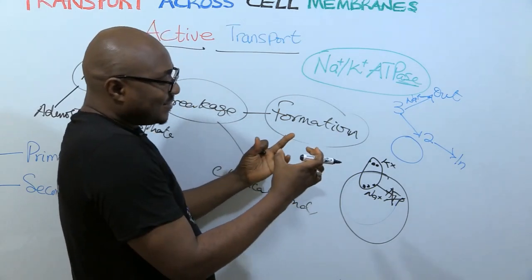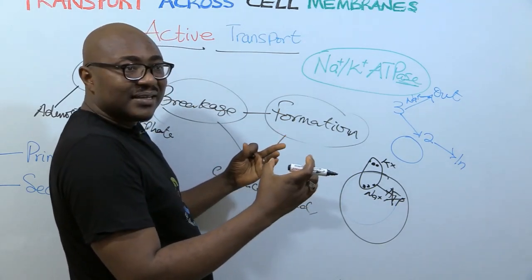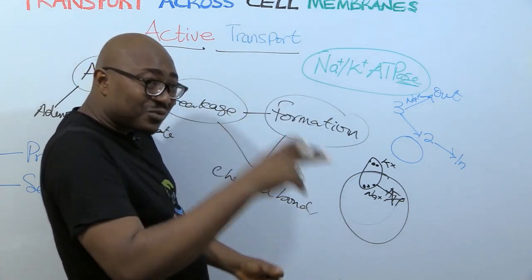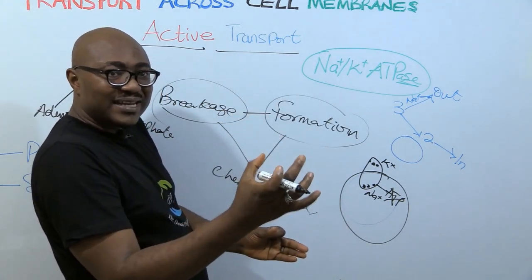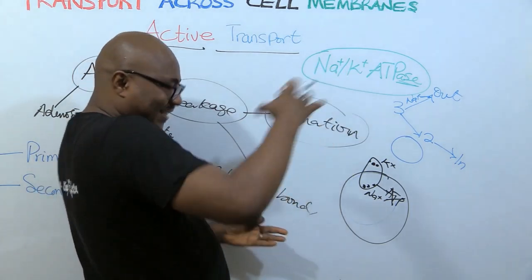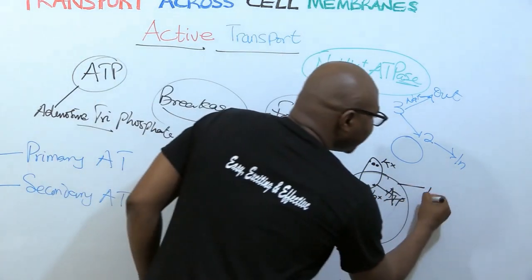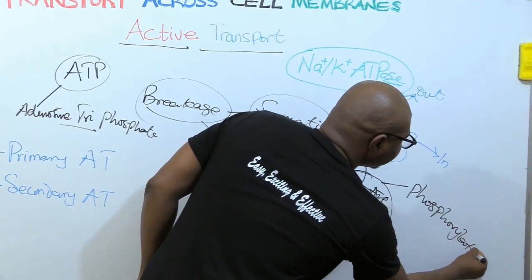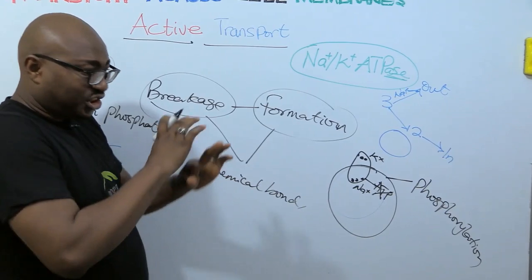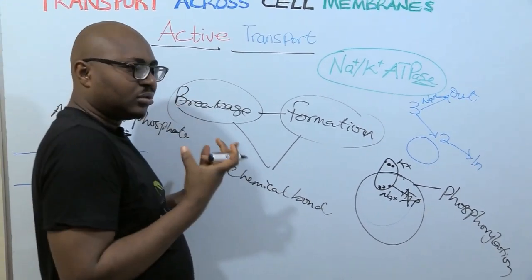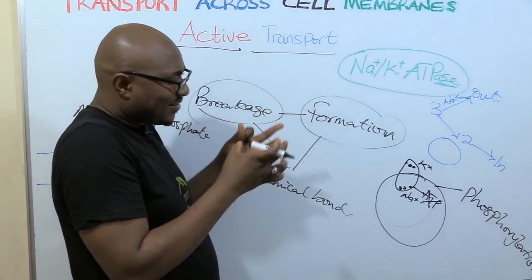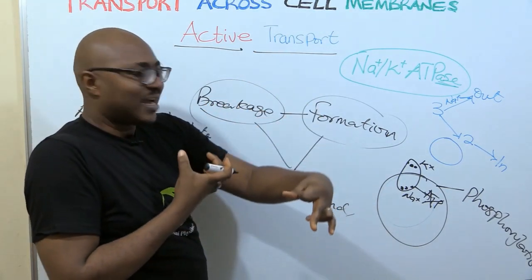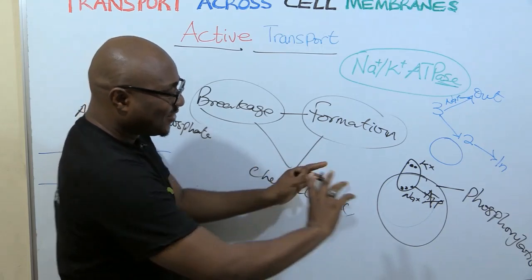Potassium needs to go inside. So what happens is that the binding of sodium to this carrier protein at those binding sites activates the enzymatic activity of this carrier protein, the ATPase. It's an enzyme. The carrier protein itself is an enzyme. So it activates the enzymatic activity and it cleaves ATP. ATP is already attached to it. So it breaks down ATP and releases the energy, the attractive force.